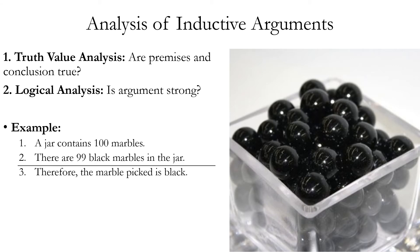Here's an example argument: a jar contains 100 marbles, there are 99 black marbles in the jar, therefore the marble picked is black — assuming you're picking at random, sight unseen. Truth value analysis asks whether the premises or conclusion are true. In this hypothetical, let's assume they're true. Notice that it's often more difficult to determine the truth of premises or conclusion than to determine if the argument is logically valid or strong. That's one reason why the concepts of validity and strength are so powerful — even if you don't know whether premises or conclusion are true, you can still tell whether the argument is valid or strong.